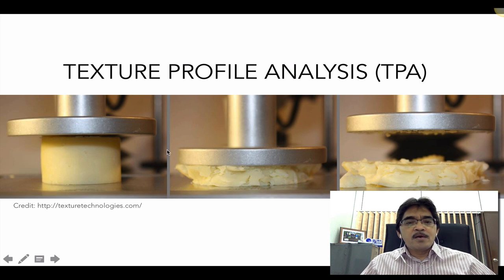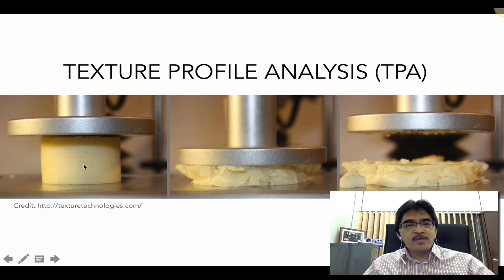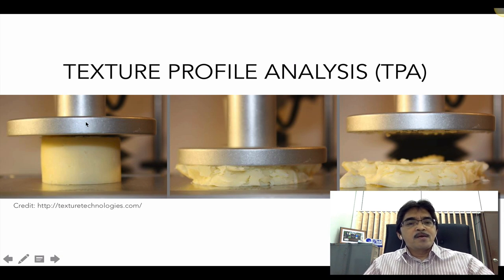This picture is borrowed from Texture Technologies, a very good website for learning about TPA. It shows how we set up the texture analyzer. We cut the sample into a specific shape of known height and diameter. Then we configure the texture analyzer — setting the speed of the probe geometry and the compression parameters.